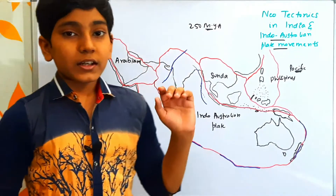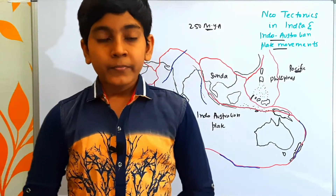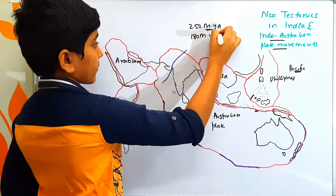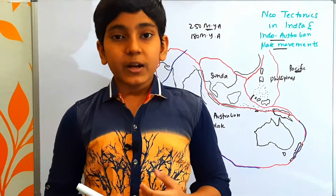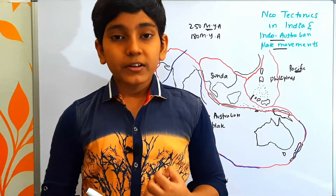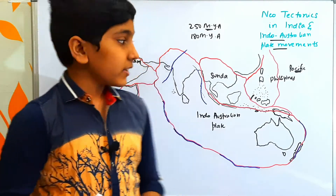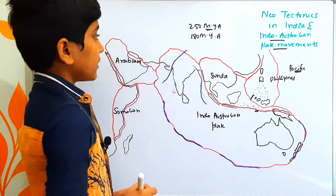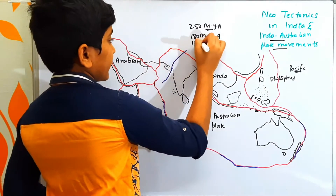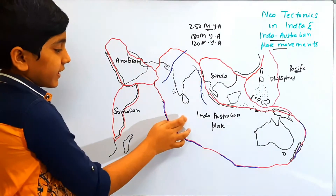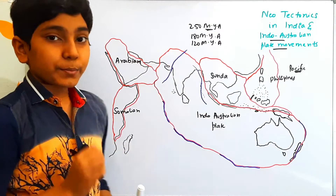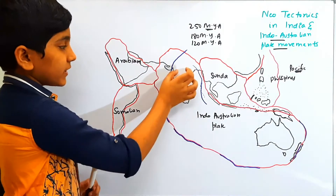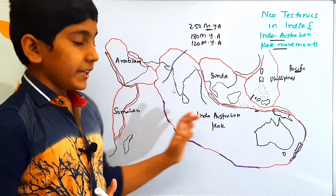That was the first event which led to the Indo-Australian plate's formation. Next, by the time of 180 million years ago, India started drifting from Africa. Due to that, we have the formation of some oceanic ridges like the Carlsberg Oceanic Ridge and the Mid-Indian Ocean Ridge. Next, by the time of 120 million years ago, India had reached a new position and started moving northwards at a speed of 12 centimeters per year, which led to the opening of the Indian Ocean.